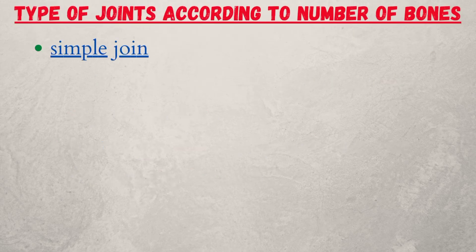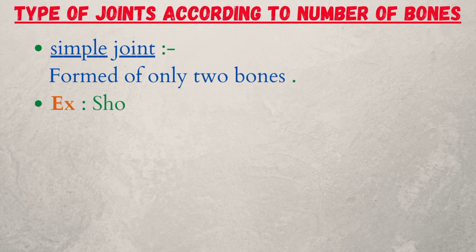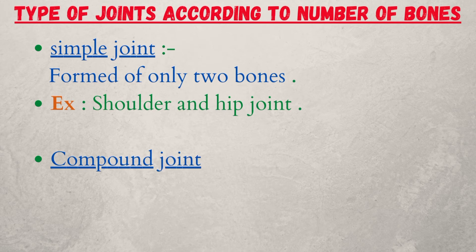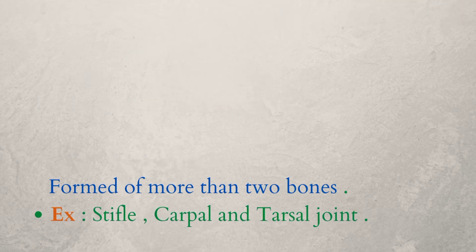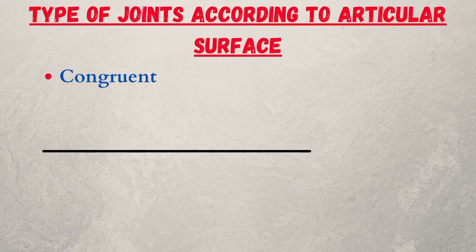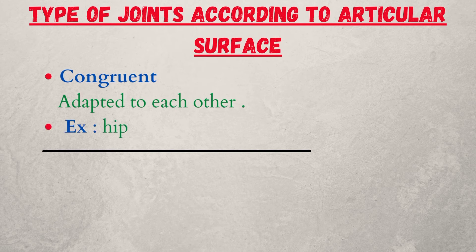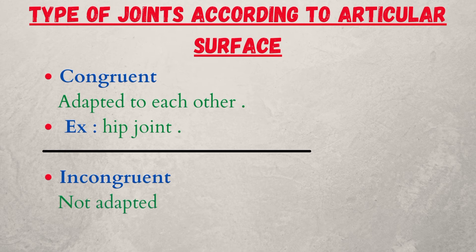Type of joint according to number of bones: simple and compound. Simple is formed of only two bones — example: shoulder and hip joint. Compound is formed of more than two bones — example: stifle, carpal, and tarsal joints. Type of joint according to articular surface: congruent and incongruent. Congruent surfaces are adapted to each other — example: hip joint. Incongruent surfaces are not adapted to each other — example: stifle joint.